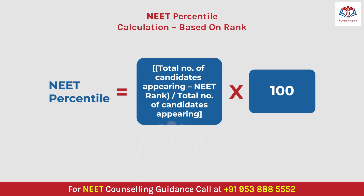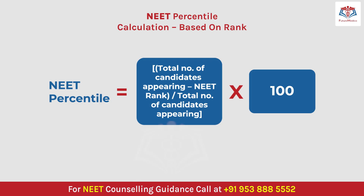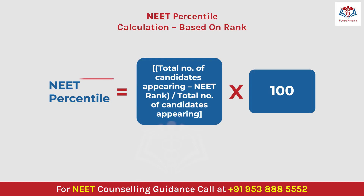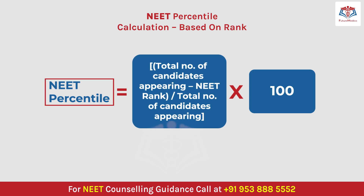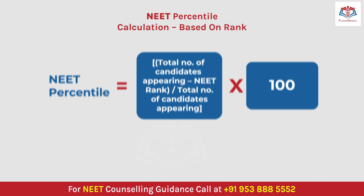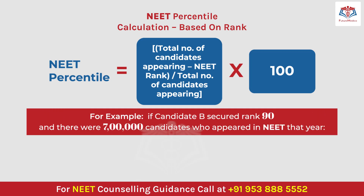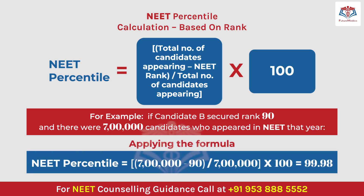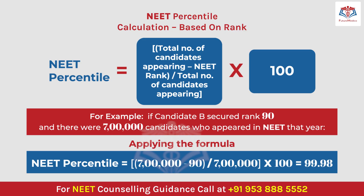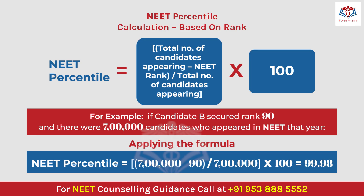Method 2 is NEET percentile calculation based on rank. This considers a candidate's NEET rank and the total number of candidates who appeared that year. The formula is: NEET Percentile = (Total candidates appearing − NEET Rank) ÷ Total candidates appearing × 100. For example, if Candidate B secured rank 90 and there are 7 lakh candidates, the result is (7,00,000 − 90) ÷ 7,00,000 × 100 = 99.98 percentile, meaning Candidate B's rank is higher than 99.98% of candidates.